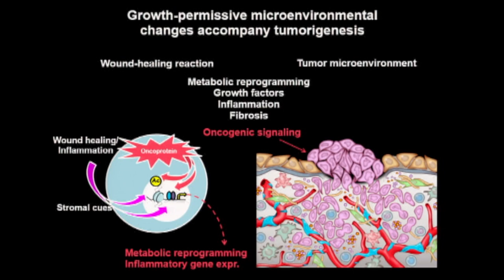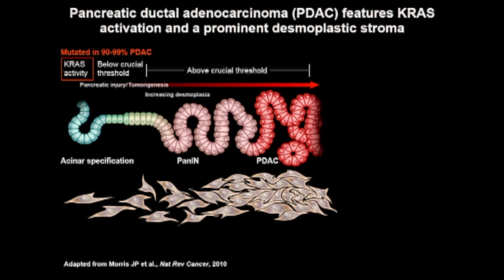Cells of the tumor-associated stroma, and stromal fibroblasts in particular, can play roles that are both tumor supportive and tumor suppressive or homeostatic in enacting a wound healing response. An improved understanding of the molecular basis of cell-cell interactions in the tumor microenvironment may help us identify and target tumor supportive mechanisms, with the hope of leaving the tumor suppressive or homeostatic mechanisms in place.